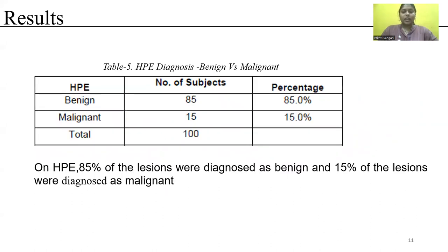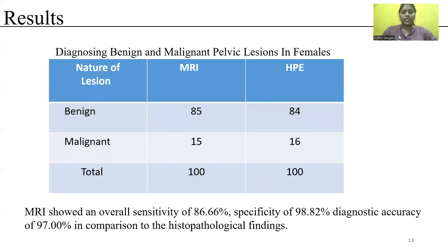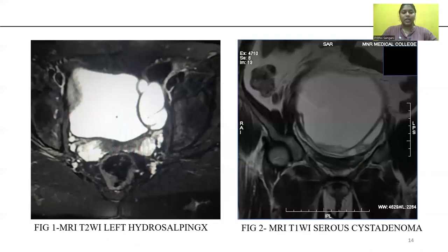Of the 100 patients, correlation of MRI with HPE showed a p-value less than 0.01. True malignant on MRI confirmed malignant on HPE: 13; diagnosed benign on MRI but malignant on HPE: 1; diagnosed malignant on MRI but benign on HPE: 2; true benign: 84. Sensitivity was 86.6%, specificity 98.8%, negative predictive value 97.6%, and overall accuracy 97%. MRI showed an overall sensitivity of 86.6% and specificity of 98.8% with a diagnostic accuracy of 97% in comparison to histopathological findings.